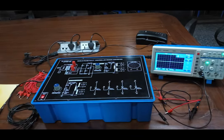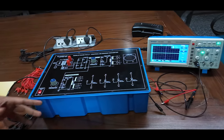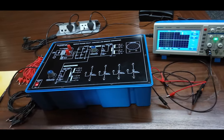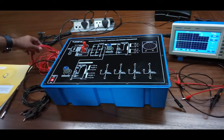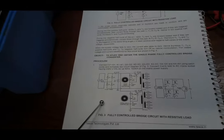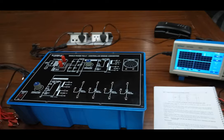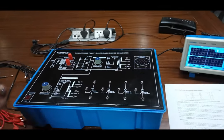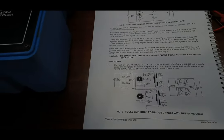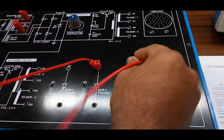Now, we move on to the next practical which is single phase fully controlled bridge converter. We will make bridge converter using these 4 SCRs with these patch cords. For making the bridge converter, we have to make these connections with the help of patch cords. First, we will connect anode of T2 and T3 together.